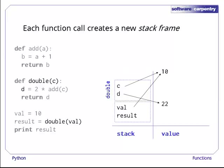Add's stack frame is popped off the stack and thrown away. The 11 it returned is multiplied by 2, and the result assigned to a new variable d. This variable is in double's stack frame, as shown here.